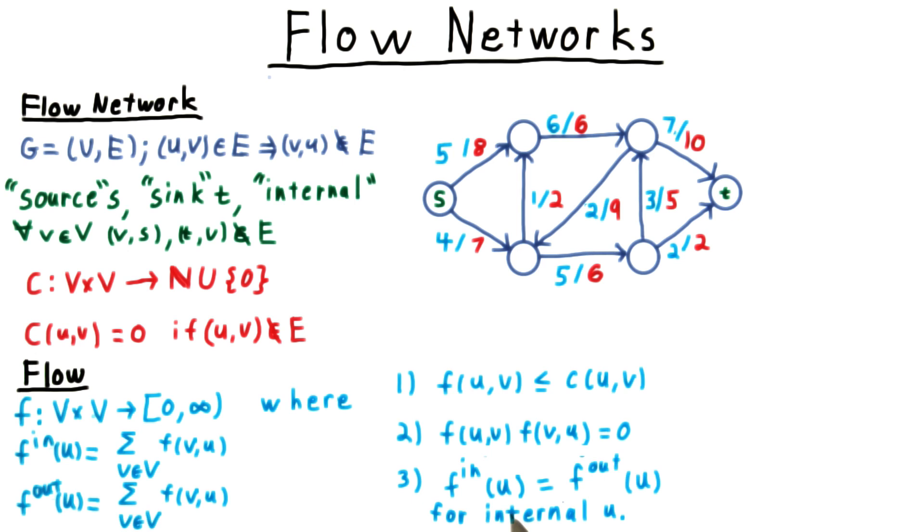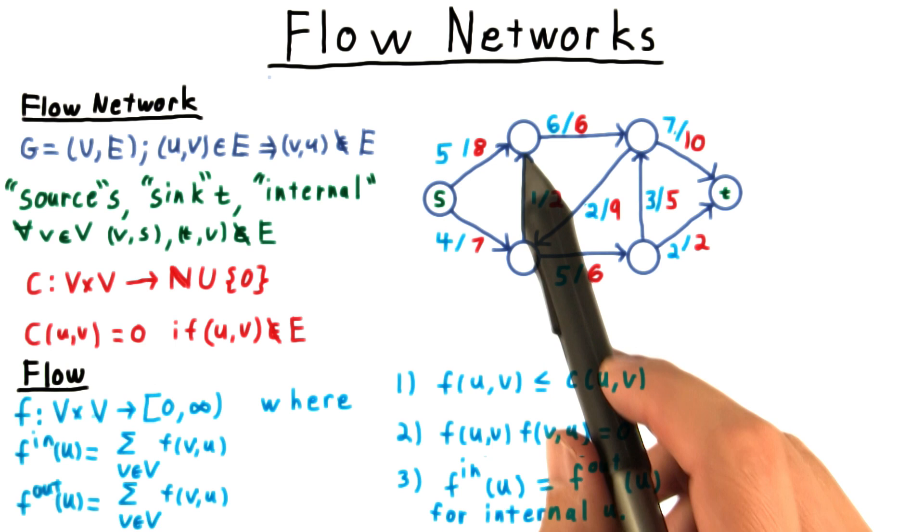So for example, in this node here, I have 4 plus 2 coming in, and I have 5 plus 1 going out. These are both 6, so we say that flow is conserved at this vertex.